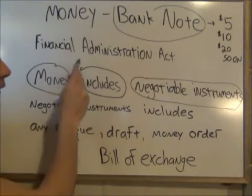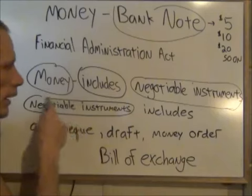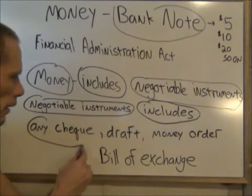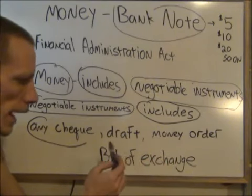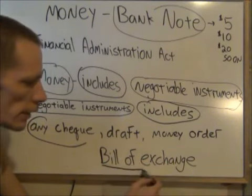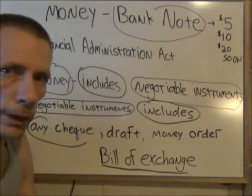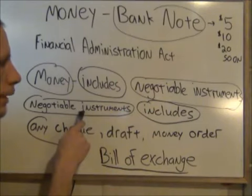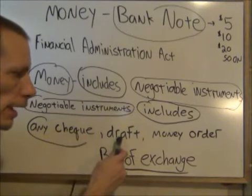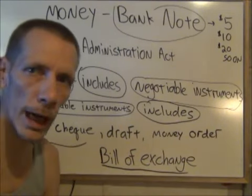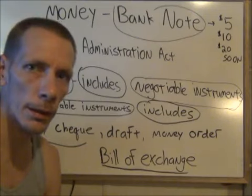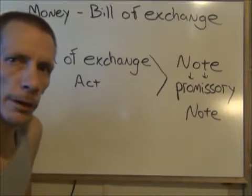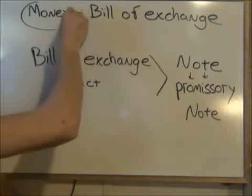In the same Financial Administration Act, it says a negotiable instrument includes — and notice they use the same word, 'includes.' Any check, any draft, any money order, any stamp, or a bill of exchange is considered money. So according to their own regulations, money is not just what you carry in your pocket. Money is any negotiable instrument, which includes any check, any draft, any money order, any bill of exchange, and any other instrument that can be used in this term. So it's at least open to a broad range of what money is.